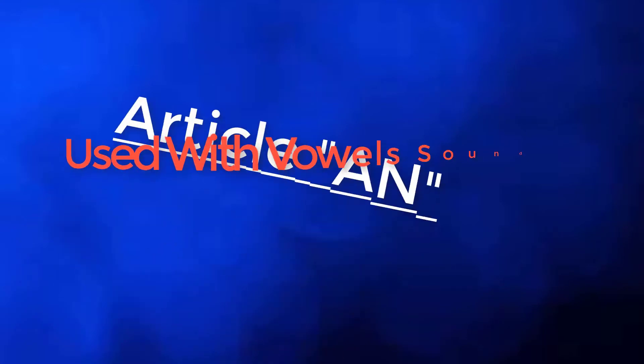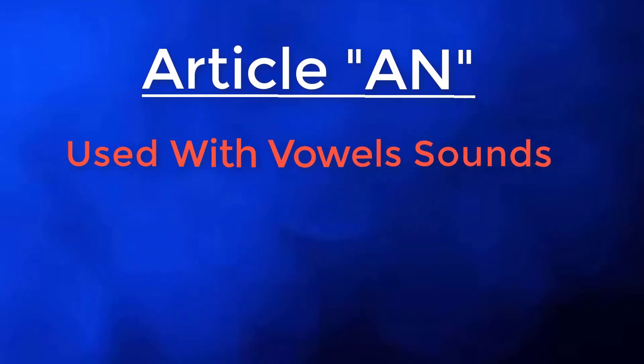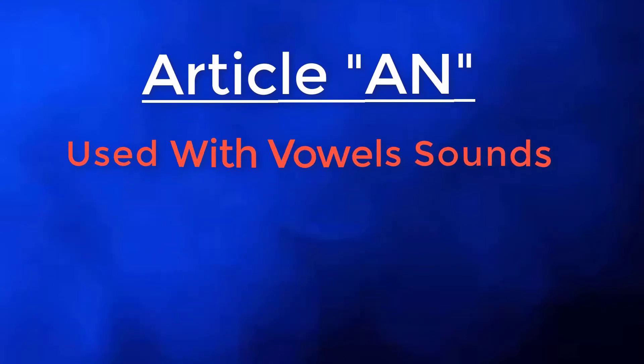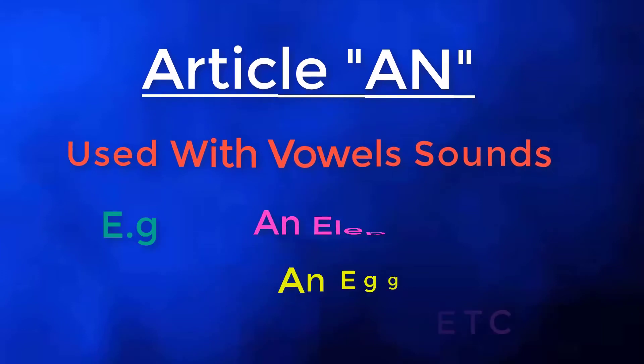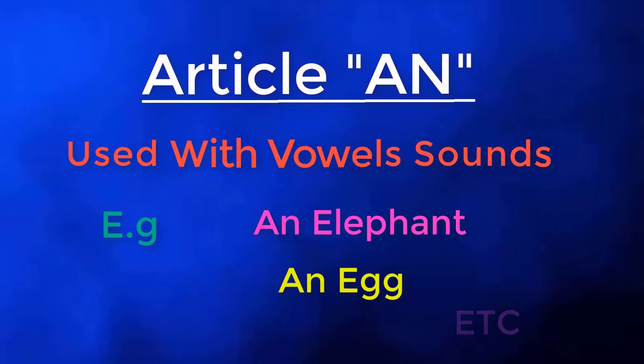Then comes 'an'. An is used with vowel sounds. For example: an elephant, an egg, etc.